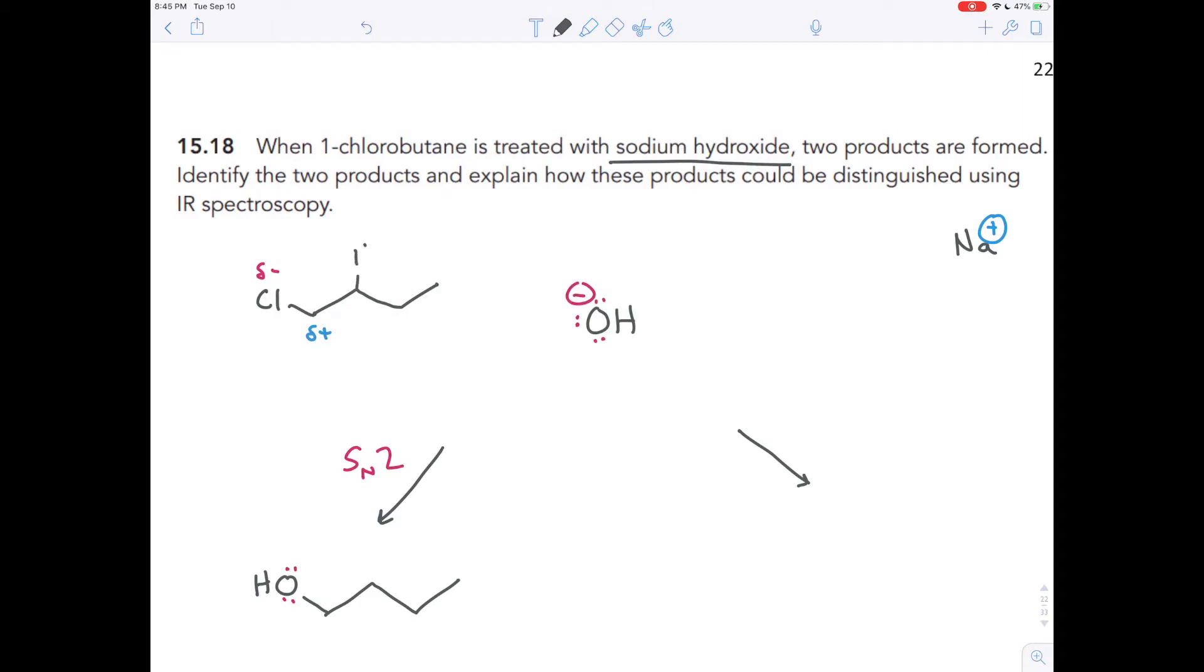And the hydrogen that this would tend to steal is not the hydrogen on the carbon with the chlorine, but the hydrogen that's one over. So the terminology you might have seen in Organic Chemistry 1 is the carbon that has the leaving group on it - that's the alpha carbon. The one next to it is the second letter in the Greek alphabet, the beta carbon.